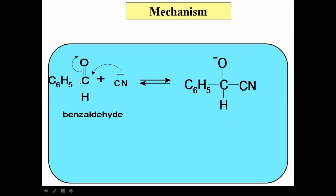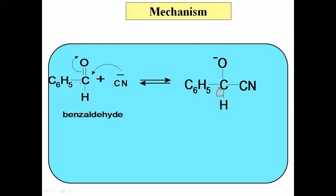This alkoxide ion has a tautomeric form. The bond between carbon and hydrogen undergoes breaking, and this electron pair goes onto the carbon. Carbon acquires a negative charge, releasing H⁺. That H⁺ adds to the negatively charged oxygen, giving an OH group.